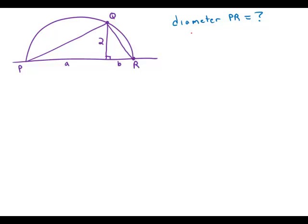Well, first of all, we know that diameter PR equals length a plus length b. So if we knew a and b together, we'd be able to figure out the diameter.